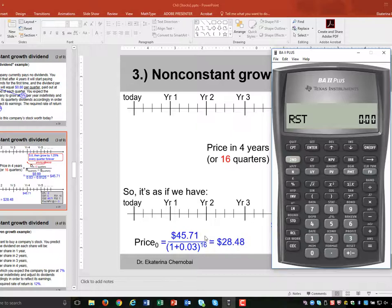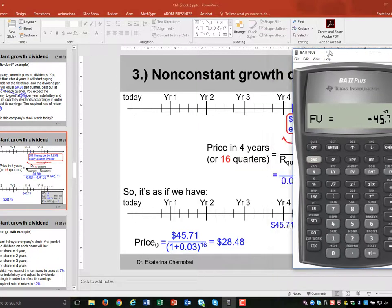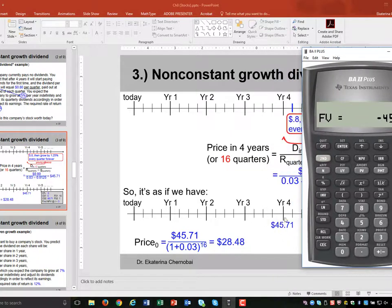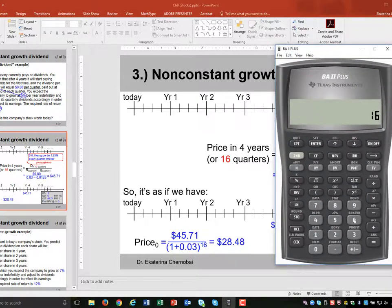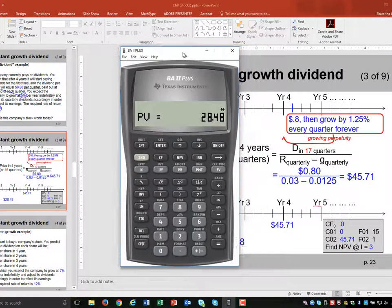So 45.71, we make it negative. That's our future value. In four years or 16 quarters to be precise. So 16 quarters, 16 is our N and the quarterly rate is 3%, IY, compute, present value, 28.48, $28.48.